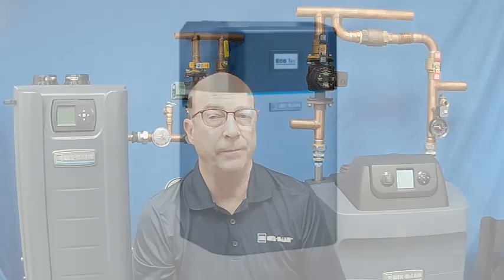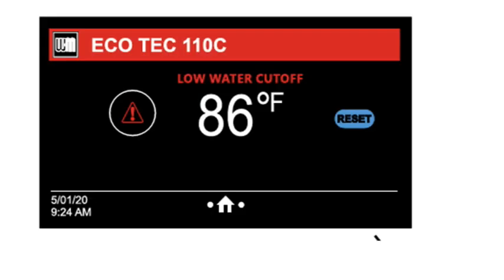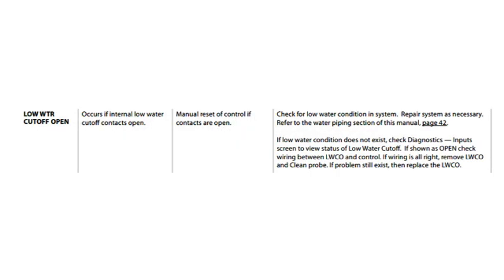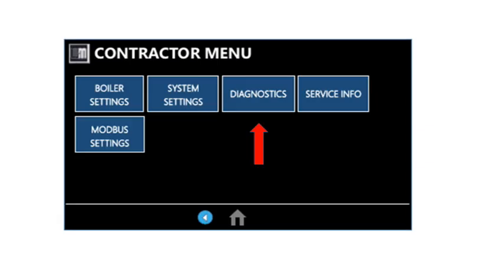For our EcoTech unit, if the boiler is in lockout the screen will show the fault name on the display. Use the manual to determine the solution for the fault. If you need to retrieve past errors, hold the WM logo for a few seconds to open the contractor menu.